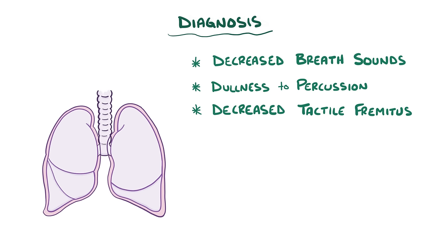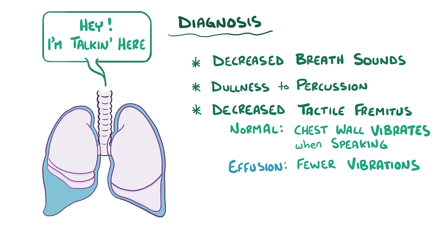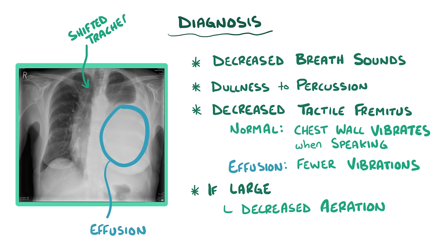Tactile fremitus is a normal finding — it's when the chest wall can be felt vibrating when a person speaks. If there's excess fluid in the pleural space, it absorbs some of this vibration energy and the vibrations can't be felt as strongly. Finally, if the pleural effusion is large enough, it can start to push against the lung, not letting it fully aerate and even causing the trachea to shift away from the side of the effusion, called tracheal deviation.